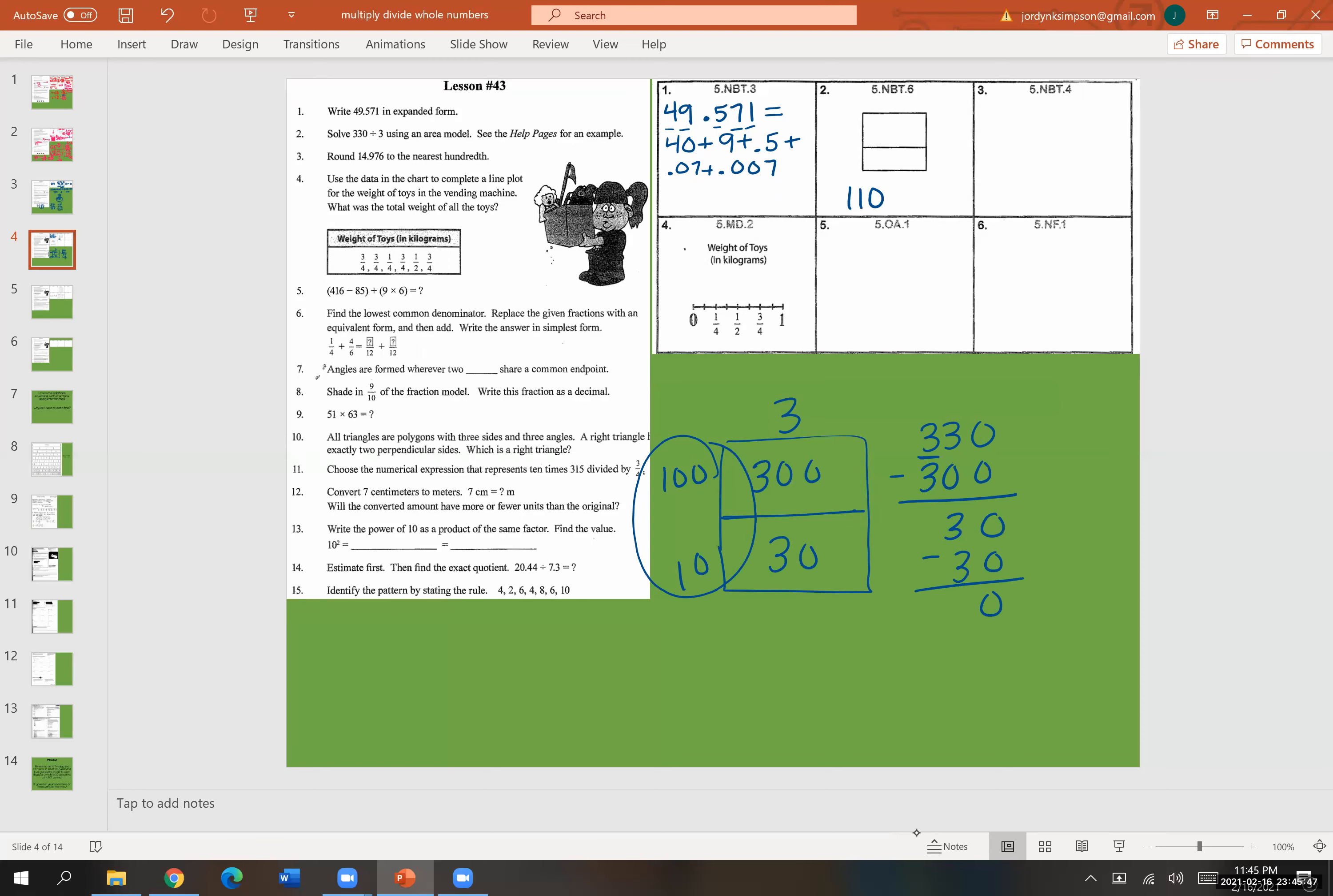Number three, we're going to be rounding 14.976 thousandths to the nearest hundredth. What digit is the hundredth place? That is a seven. Neighbor is a six. Four less or five or more? That is five or more. So go up one more. Seven will turn to eight. Everything in front stays the same. Everything behind zeros their name. So this would have rounded to 14.980 thousandths.